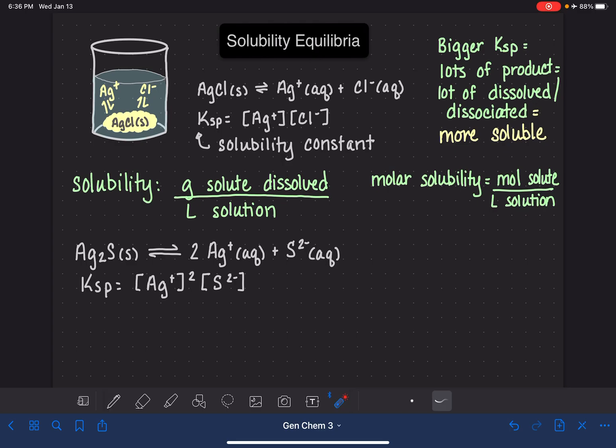Not only can we learn a lot about the system by looking at its value of K, we can also learn a lot about the system by looking at its value of Q. We haven't talked about Q in a long time. Q and K are calculated in the exact same way. So Q is also calculated by taking products over reactants raised to their stoichiometric coefficients. So again, the equation that we use to calculate K is exactly the same as the equation that we use to calculate Q.